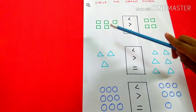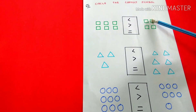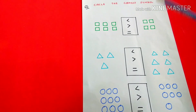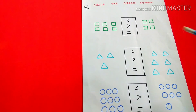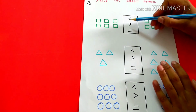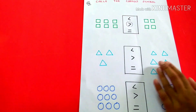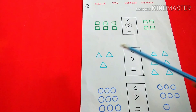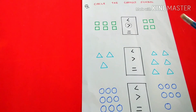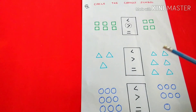4, 5, 6. 1, 2, 3. 1, 2, 3. 1, 2, 3. 3, 4, 5, 6.